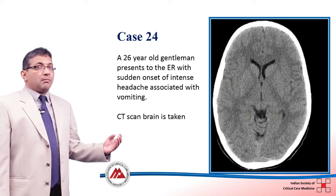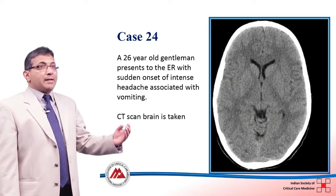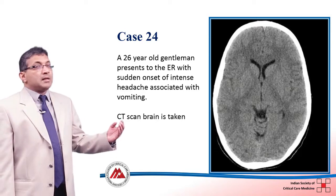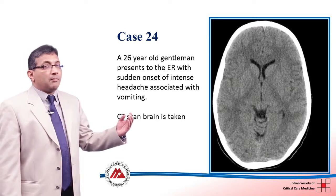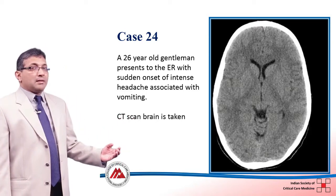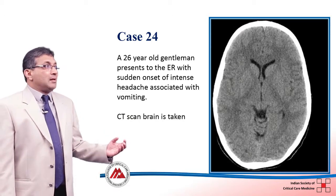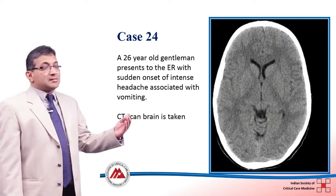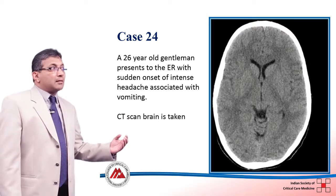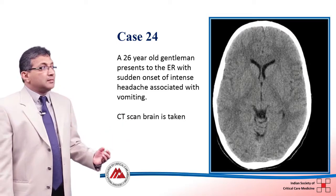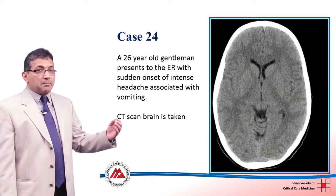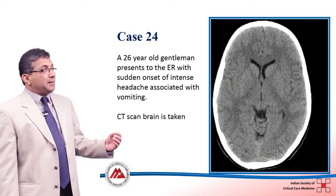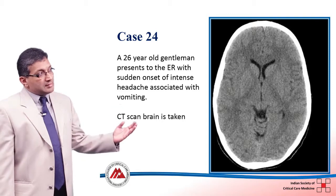So if you see something white within the brain parenchyma, it is blood. The next most common finding is a slightly darker shade of gray — but not black — which would be an infarct. And if you see something black, it is usually fluid. With that background, let's look at this CT brain.